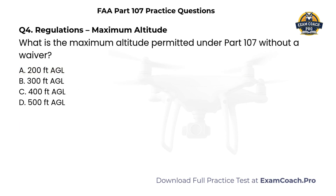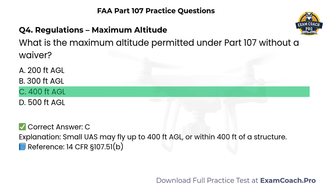Regulations. Maximum altitude. What is the maximum altitude permitted under Part 107 without a waiver? A. 200 feet AGL. B. 300 feet AGL. C. 400 feet AGL. D. 500 feet AGL. Correct answer: C. Small UAS may fly up to 400 feet above ground level, or within 400 feet of a structure.